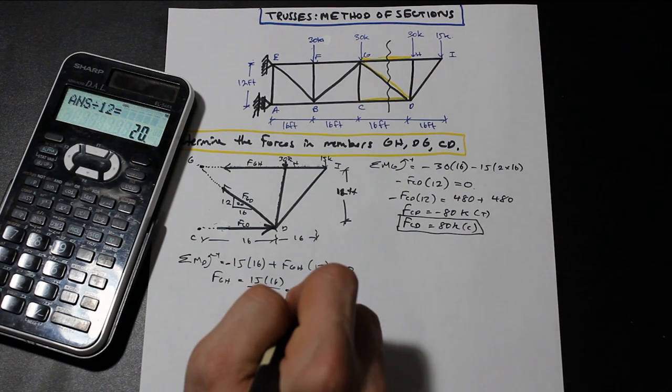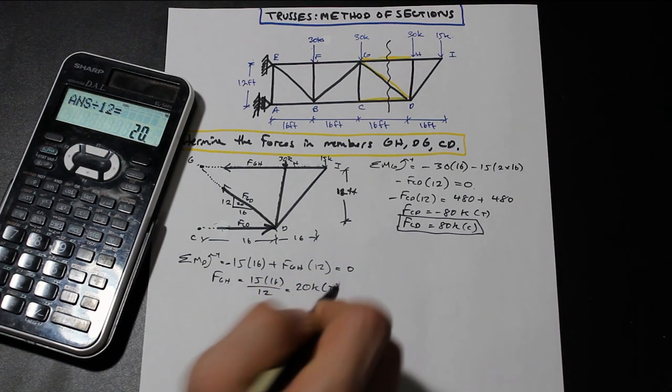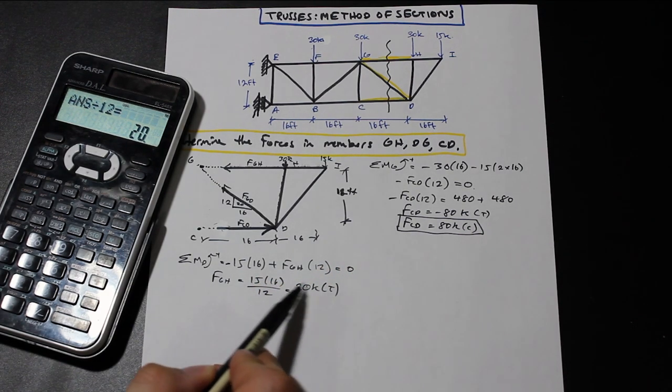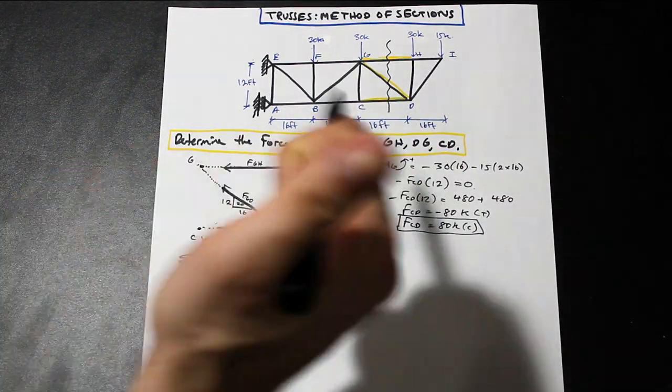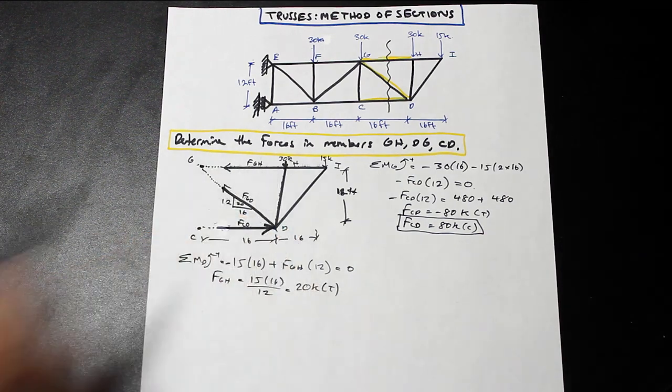We're going to get that FGH is equal to 20 kip tension. So as you can see this time, we got a positive value. That means that the direction that we assumed for FGH is correct. This member is in tension.